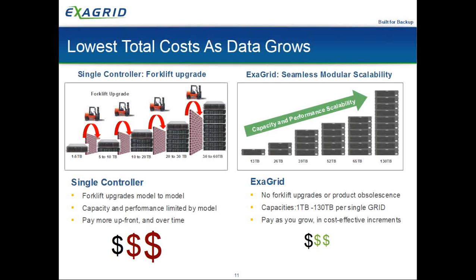With our recently announced newer model, in a single grid we can support up to 130 TB of backup data — that's front-end data backed up in a single grid, not the grid's raw capacity. With our new EX21000 model, a single grid can support up to 210 TB of backup data. If you have more data than that, you simply stand up another grid.